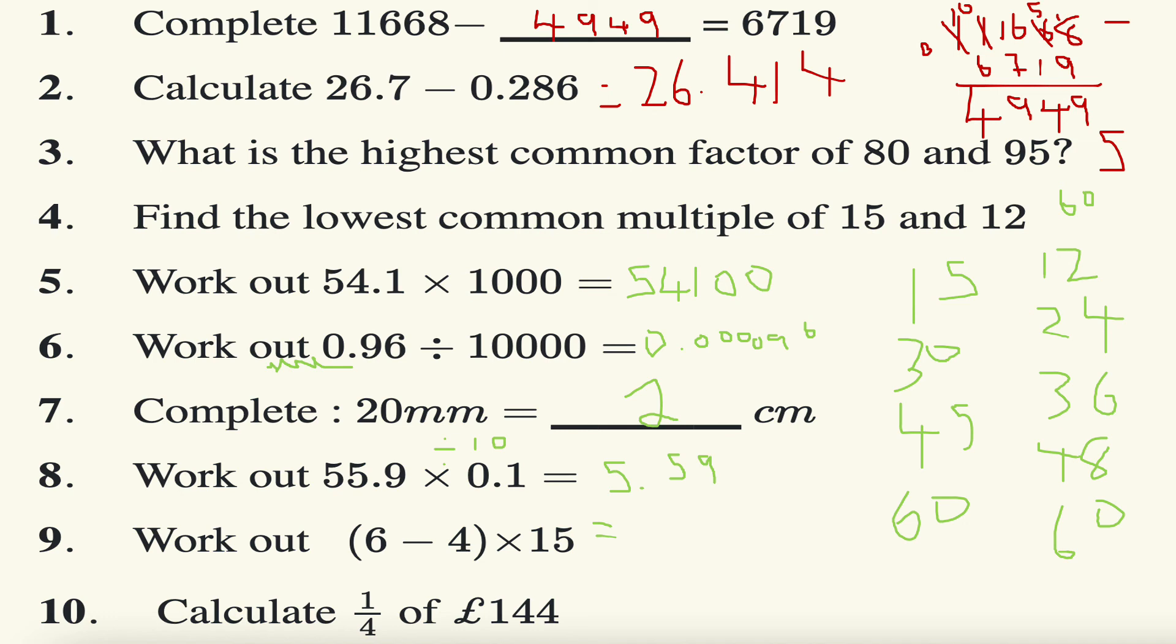The next one, question number nine: work out six take away four times 15. While using BIDMAS, brackets first, six take away four is two, two multiply by 15 is equal to 30.